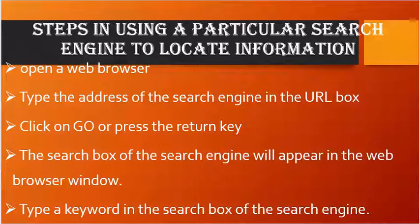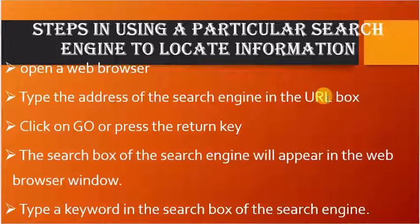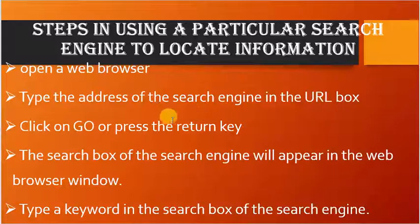When you open a web browser, in the address box you type the address of the search engine in the URL box. For example, assuming we want to use Go.com as a search engine for locating information, we type www.go.com in the address box of the web browser. Then you click on Go or press the Return key on the keyboard.